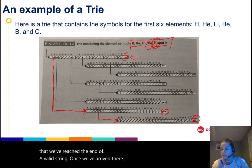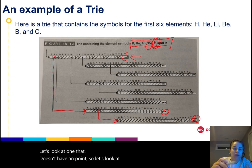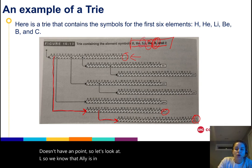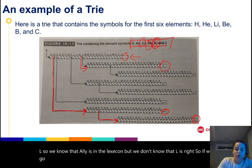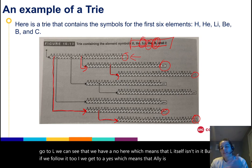Let's look at one that doesn't have an endpoint. Let's look at L. We know that Li is in the lexicon but we don't know that L is. If we go to L, we can see that we have a 'no' here, which means that L itself isn't in it. But if we follow it to I, we get to a 'yes,' which means that Li is in it.